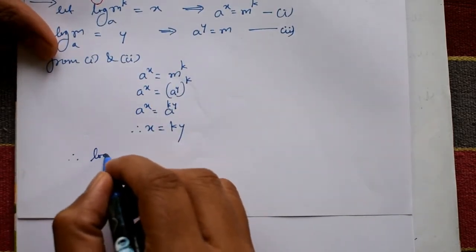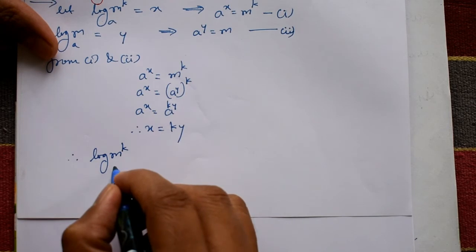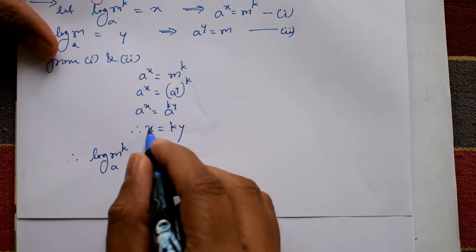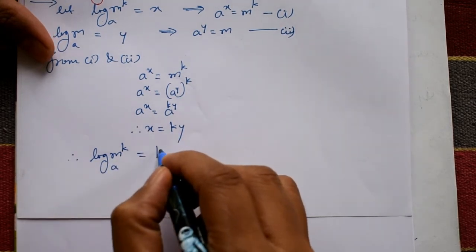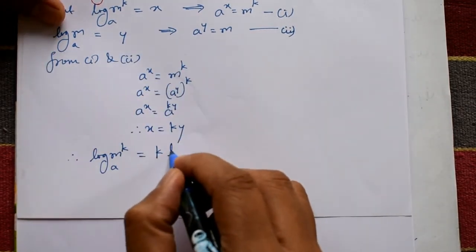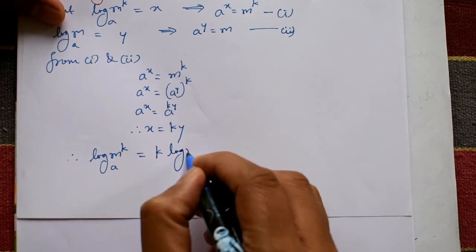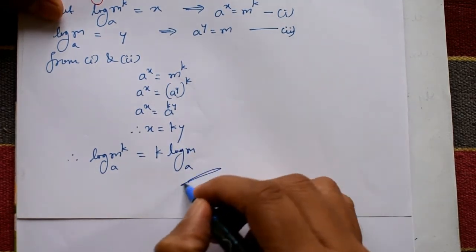Therefore, log m raised to k to the base a — that is x — is equal to k times y, which is k times log m to the base a. This is the required proof.